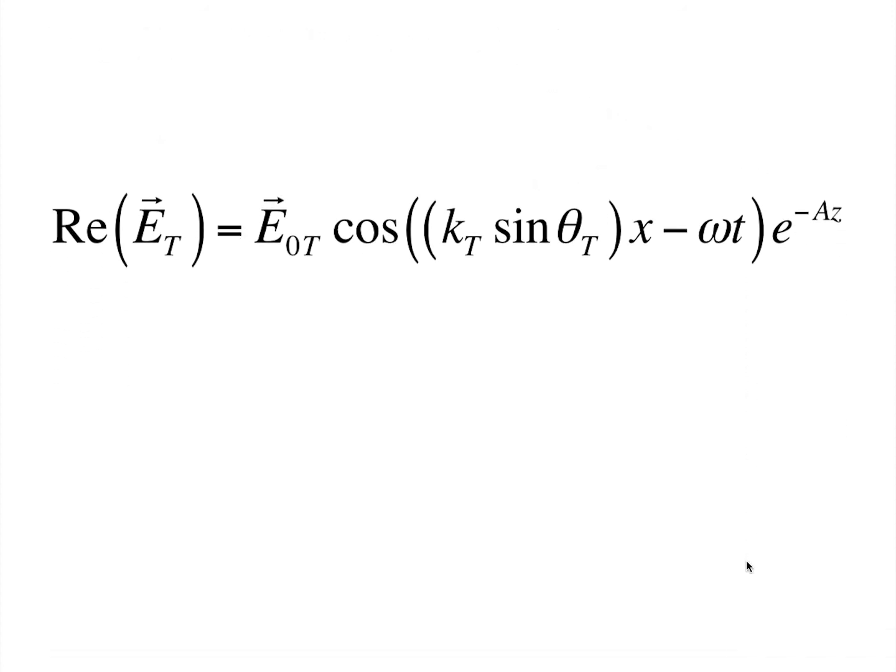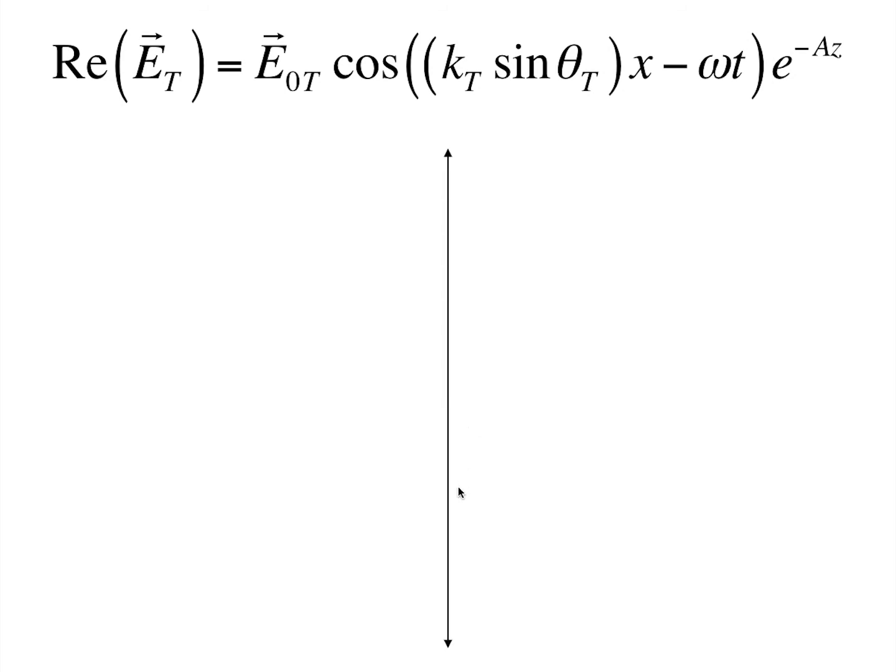So, let's look at this pictorially. If this is the positive x direction, which is along the interface and this is the positive z direction, which is normal to the interface, this is the incident ray and this is the reflected ray,